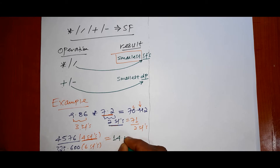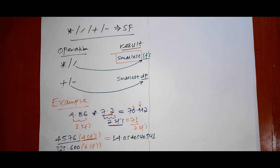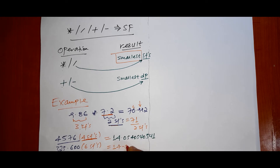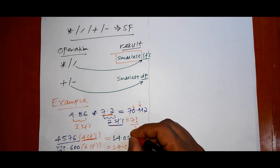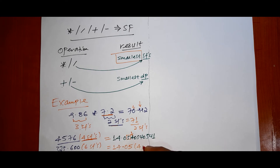The calculator result is 14.05405... We need to round to four significant figures. Looking at the digits: 1, 4, 0, 5 — these are the four significant figures. The result is 14.05.